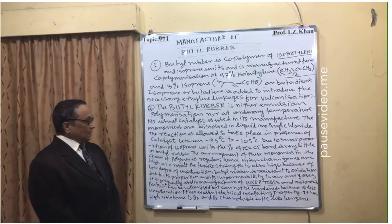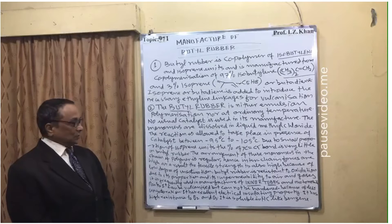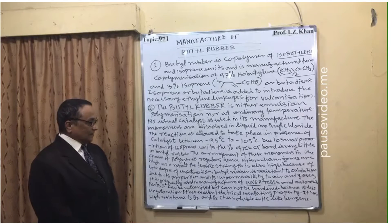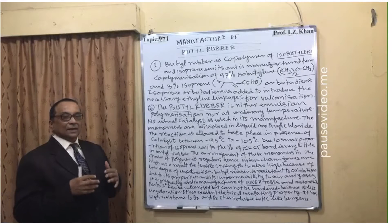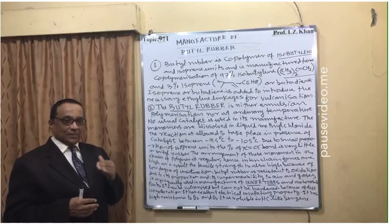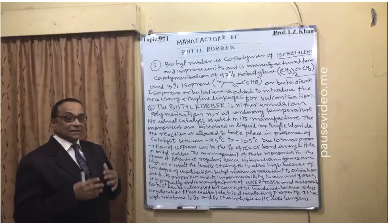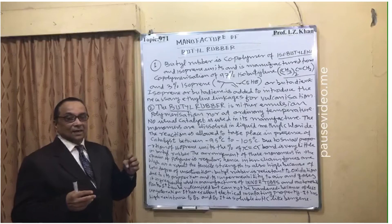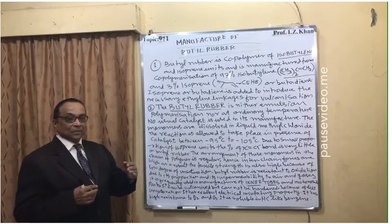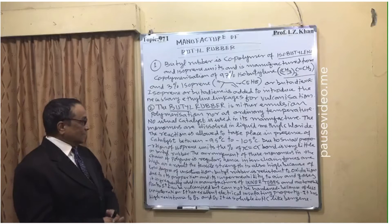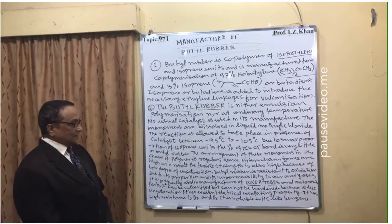The arrangement of these monomers in the polymer chain is regular; hence intermolecular forces are high. As a result, the tensile strength is also high. Since it is uniformly and regularly arranged and has less unsaturation — fewer carbon-carbon double bonds — the intermolecular forces are strong. The isoprene units and isobutylene units are regularly arranged, and because the forces are strong, butyl rubber has high tensile strength.